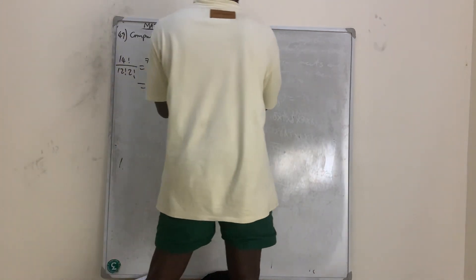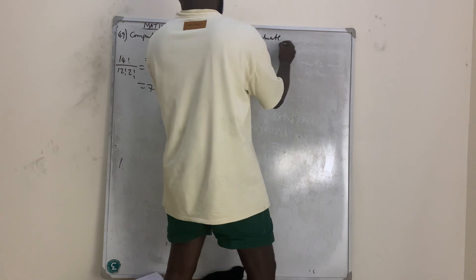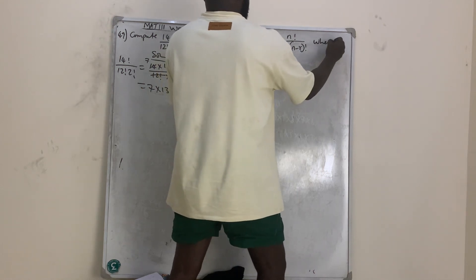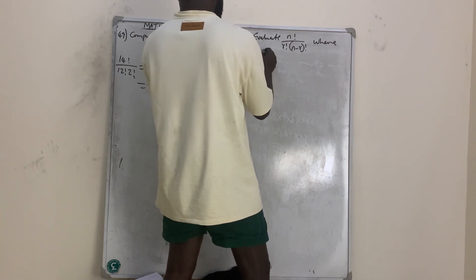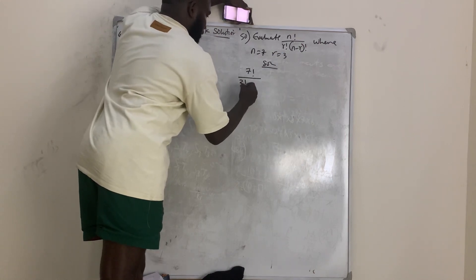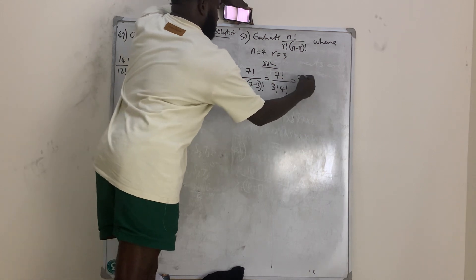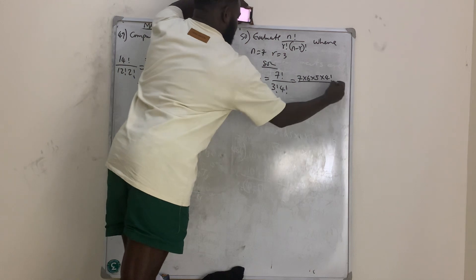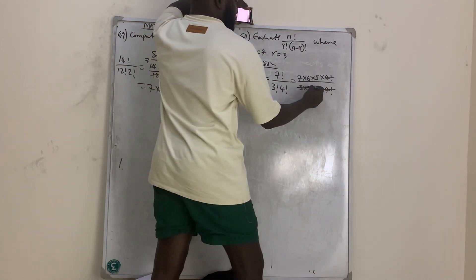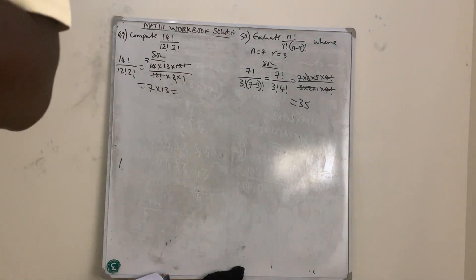Question number 50: evaluate n factorial over (r factorial times (n minus r) factorial), where n equals 7 and r equals 3. Substituting: 7 factorial over (3 factorial times 4 factorial). Expanding the numerator: 7 times 6 times 5 times 4 factorial, over 3 times 2 times 1 times 4 factorial. The 4 factorials cancel, and 6 cancels with 3 times 2, leaving 7 times 5 equals 35.